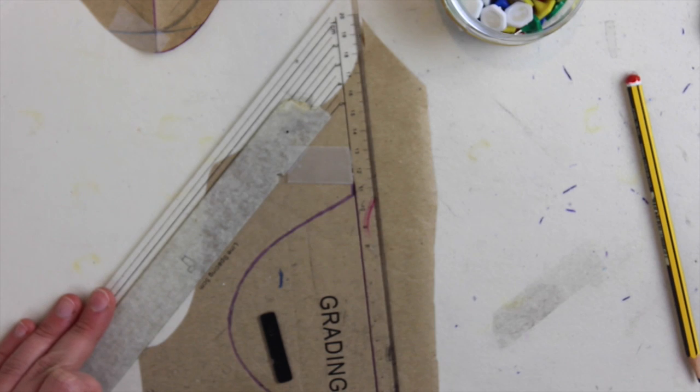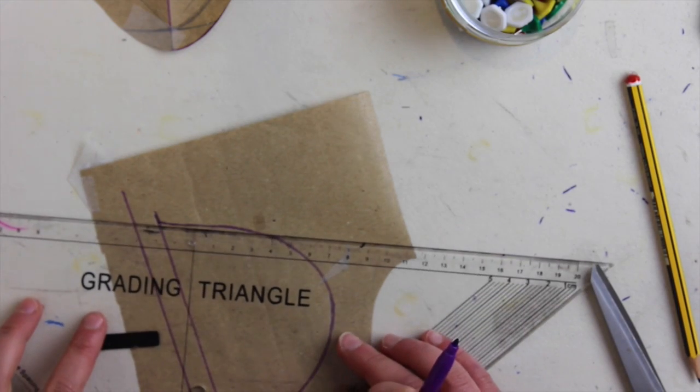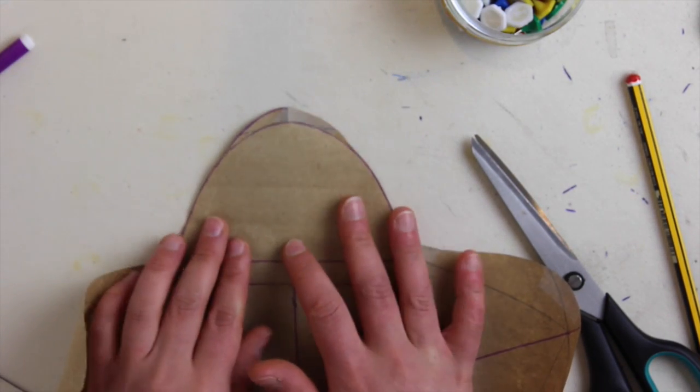Since I am using a material that frays, I need to put a cm seam allowance. If you are using regular fleece, you don't need to do that. And that's your hood pattern made up. Easy, right?